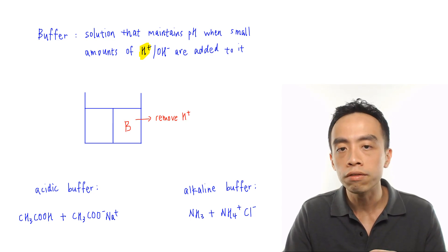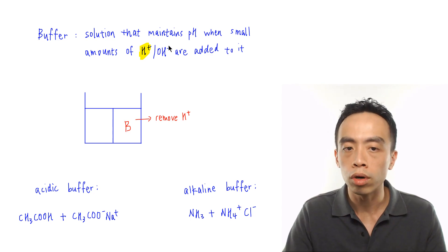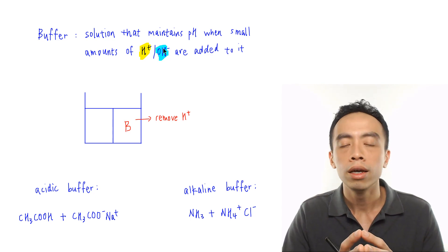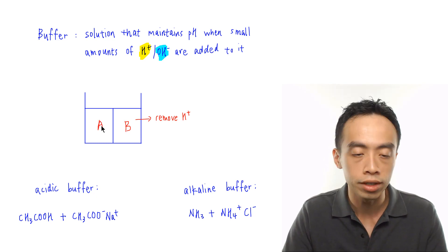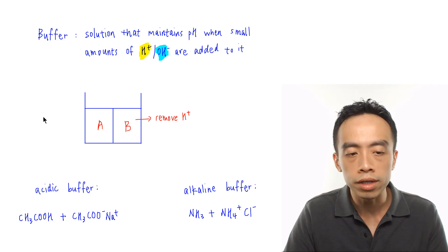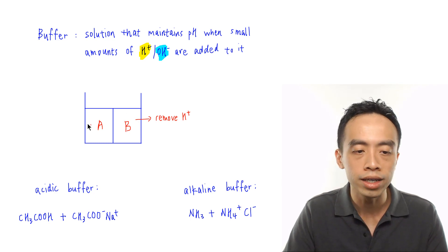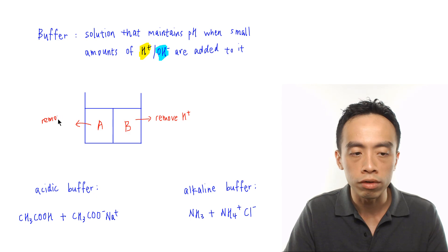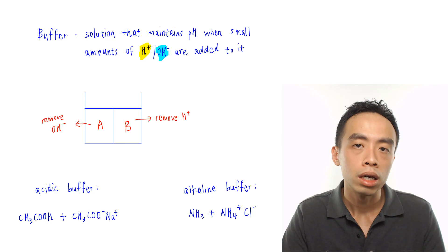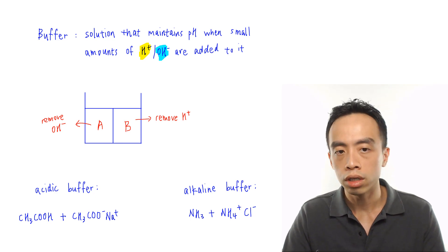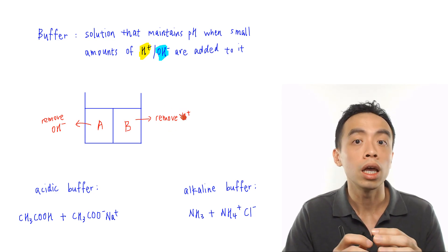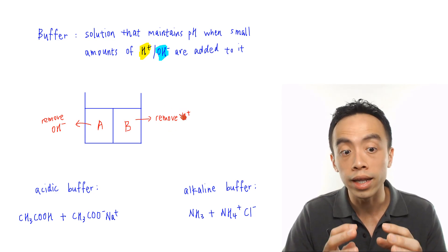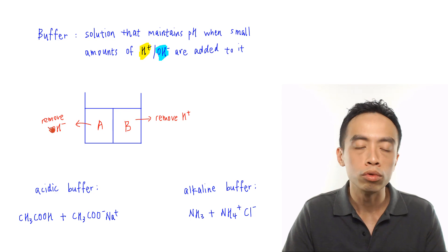Similarly, if this buffer solution can maintain pH when small amounts of OH- are added, then inside this buffer solution there must be an acid present. The function of this acid is to remove OH-. So the acid inside this buffer has the job of removing OH-. A buffer maintains pH because a base removes H+ and an acid removes OH-.